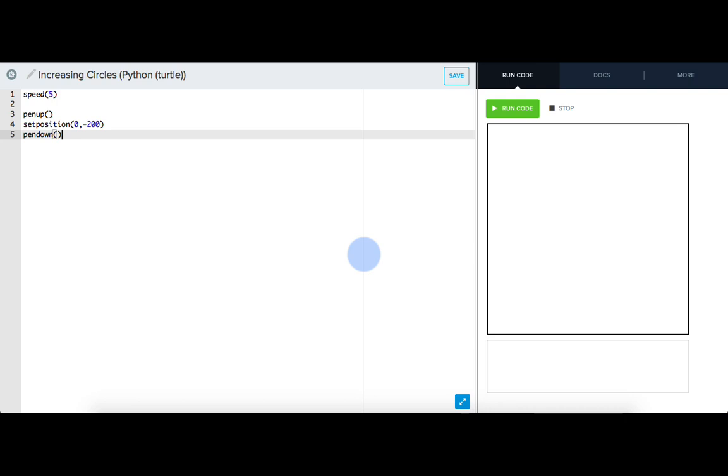And I want Tracy to draw circles that get larger, so I'll use a variable called radius to control this. Let's write this at the top of my code. So radius equals, and I want the first circle to have a radius of 10.